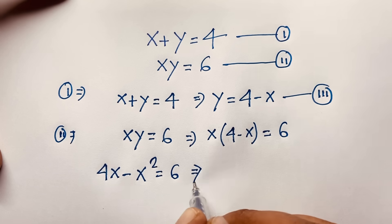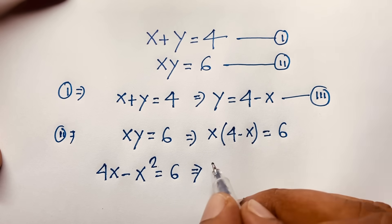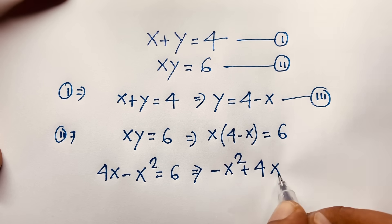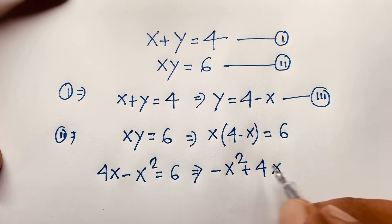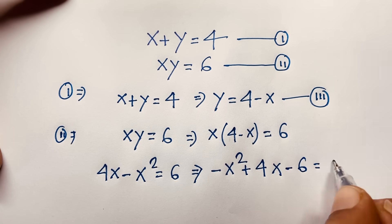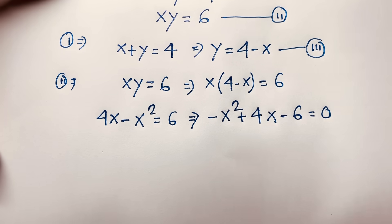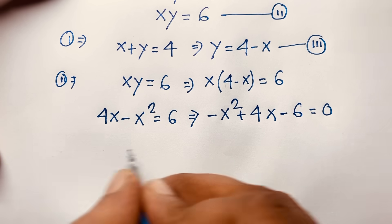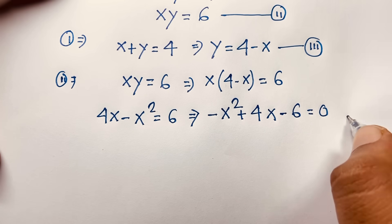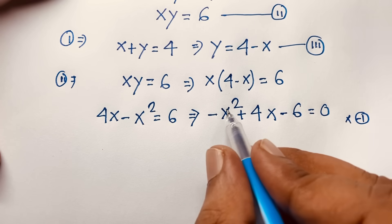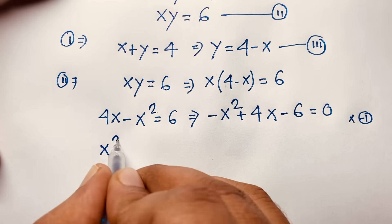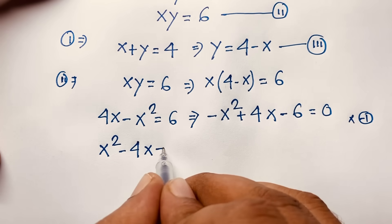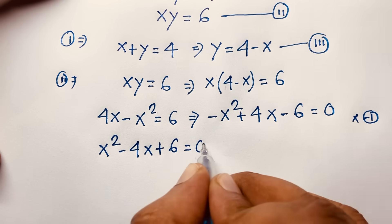It is a nice quadratic equation. We have minus x squared plus 4x minus 6 is equal to 0. If I multiply both sides by negative 1, it will be positive x squared minus 4x plus 6 is equal to 0.